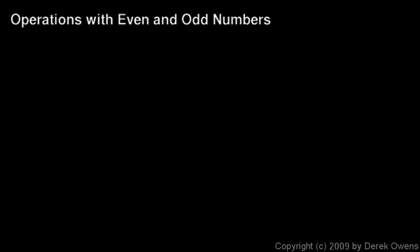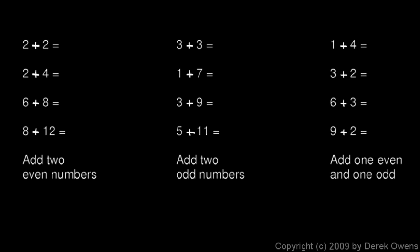Now we'll talk about operations with even and odd numbers — by operations we mean mathematical operations, specifically addition and multiplication. When you add or multiply numbers, whether the answer is odd or even depends on the original numbers, specifically whether the original numbers are odd or even. Let's look at some examples involving addition first, and take note of the pattern that becomes evident.